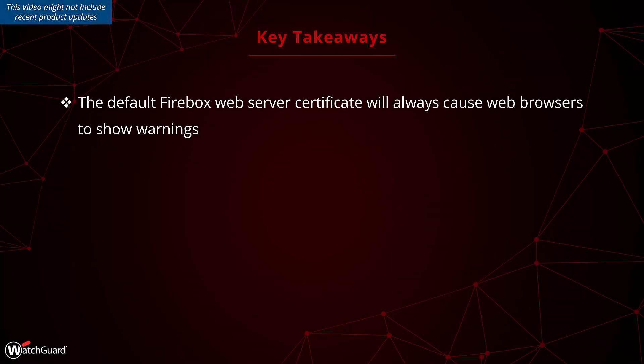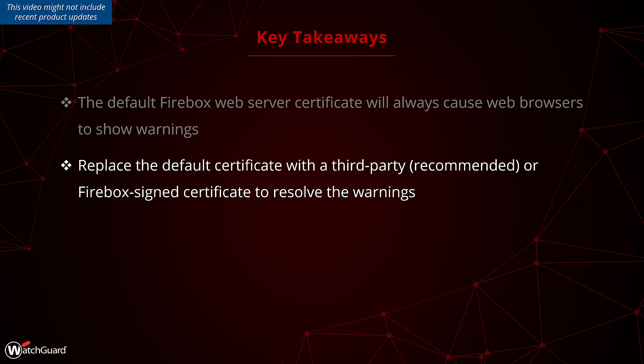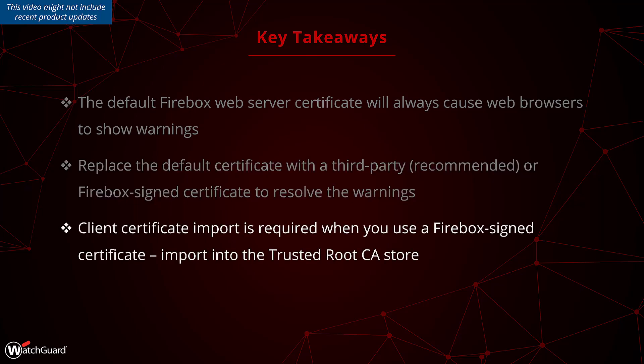Just to recap: the default Firebox web server certificate will always throw certificate errors in your browser because it's missing key information and is not signed by a trusted CA. You can resolve this by replacing it with a third-party certificate obtained from either a public CA or a local CA, or you can use a Firebox-signed certificate. If you choose the Firebox-signed certificate, you will need to import it onto client machines and place it into the Trusted Root Certification Authority store — otherwise the browser will not recognize it. For more information on Firebox certificates, please use the WatchGuard technical search.